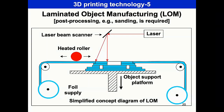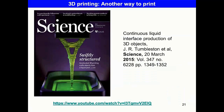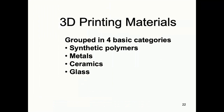There are several other examples of new printing methods recently reported. One paper in Science describes continuous liquid interface production of 3D objects, another interesting direction where you have a liquid and the 3D printing structure emerges from it. That concludes the first part covering the technological options we have for 3D printing. Next are the materials used for 3D printing, which can be grouped into 4 basic categories: synthetic polymers, metals, ceramics and glass.